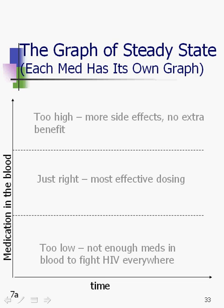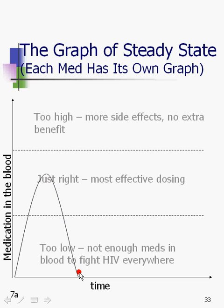Let's see how this works. Let's say that somebody takes a med every day at 7am. That medication every single day — this is where they swallow it — then it starts to get distributed through the bloodstream, and then at a certain point it tops out. Then it starts to get excreted, it starts to leave the bloodstream. So for every dose, every day, a pill goes through this pattern in a bell curve way.